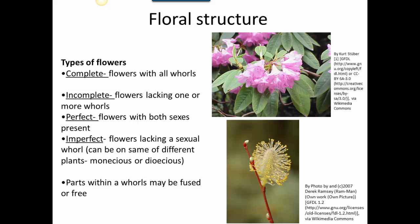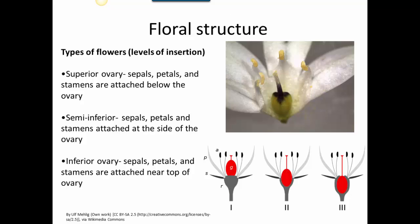Parts within a whorl may be fused or free. Looking at this rhododendron flower, you can see that the petals are fused together, forming a cone-shaped corolla. Another important characteristic for identification purposes is the level of insertion of the ovary. This onion flower is an example of a superior ovary, where the sepals, petals, and stamens are attached below the ovary.